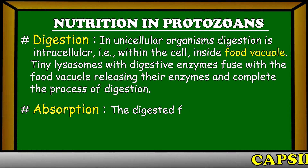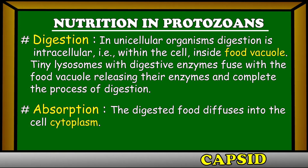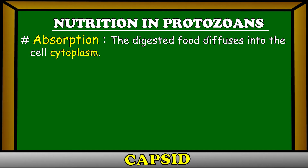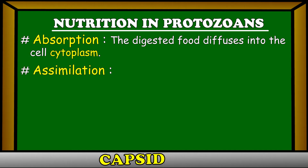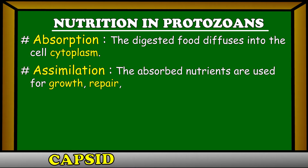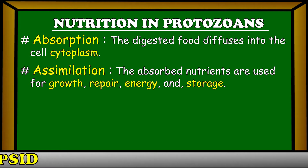Absorption: The digested food diffuses into the cell cytoplasm. Assimilation: The absorbed nutrients are used for growth, repair, energy, and storage.